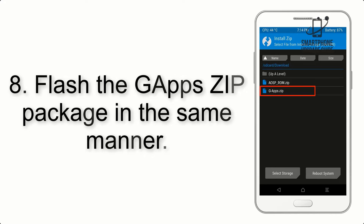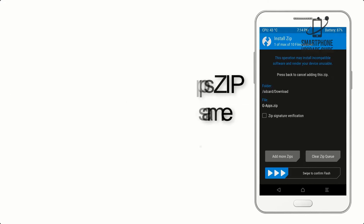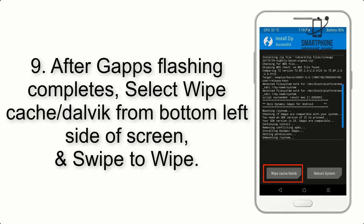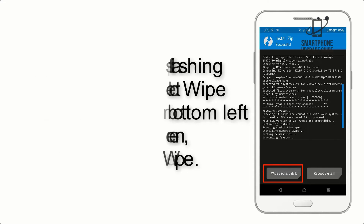Step 8: Flash the GApps zip package in the same manner. Step 9: After GApps flashing completes, select Wipe Cache and Dalvik from the bottom left side of the screen and swipe to wipe.